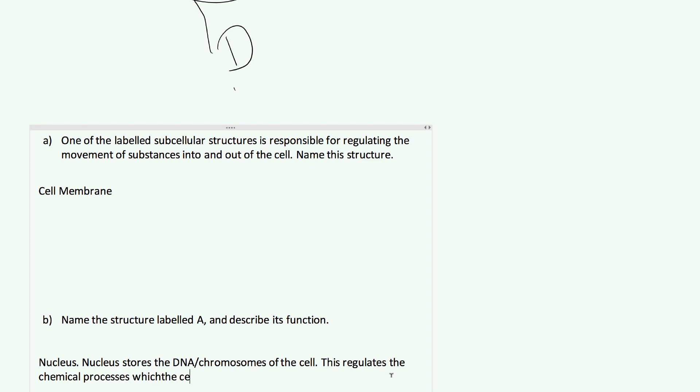If you wanted to go a little bit further you can also say that this regulates the chemical processes which the cell carries out. What does that mean? Your DNA basically is the code which makes you up. The DNA pretty much dictates what the cell is going to be doing. Not going into too much detail, but certain parts of your DNA may code for a specific enzyme. That enzyme may then catalyze a certain reaction, it allows a reaction to happen in the cell, but that all stems from the DNA.